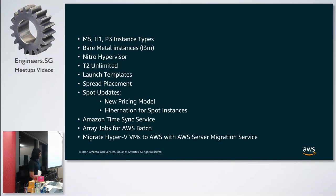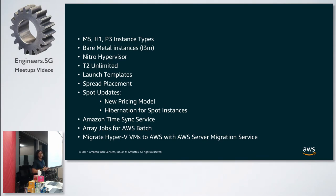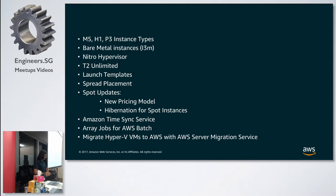Starting with re:Invent compute updates: we introduced M5, H1, and P3 instance types. M5 is the new EC2 family with 40% price and performance improvement, powered by the new lightweight Nitro hypervisor — a new virtualization based on KVM kernel module, more lightweight, powering our compute instances going forward. H1 is the new dense storage instance family for big data — Kafka streaming, MapReduce. P3 features the NVIDIA Tesla V100 GPU.